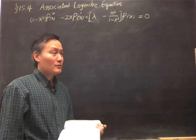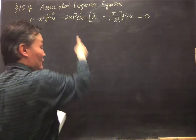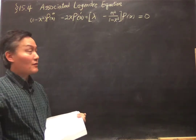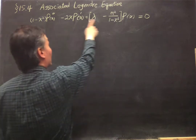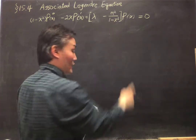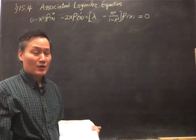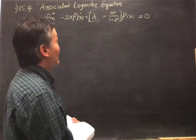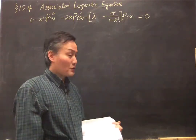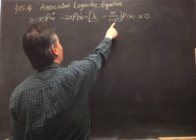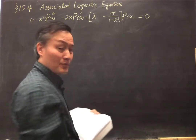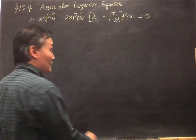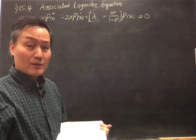The theta equation will be of this form, with x equals cosine theta. So 1 minus x squared is sine squared theta. There's a sine squared theta here, and a sine squared theta in the denominator of this term. That's what we originally got. But for the case with cylindrical symmetry, we can set m equals to 0, so that equation becomes the Legendre Equation and the solution — the Legendre Polynomials.